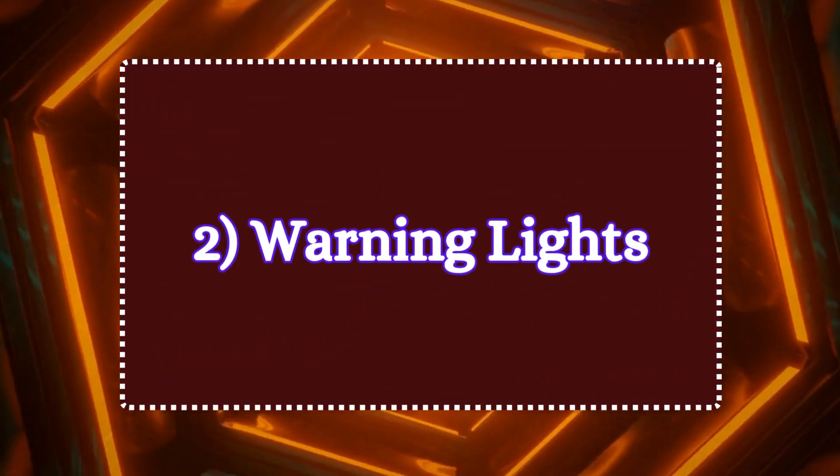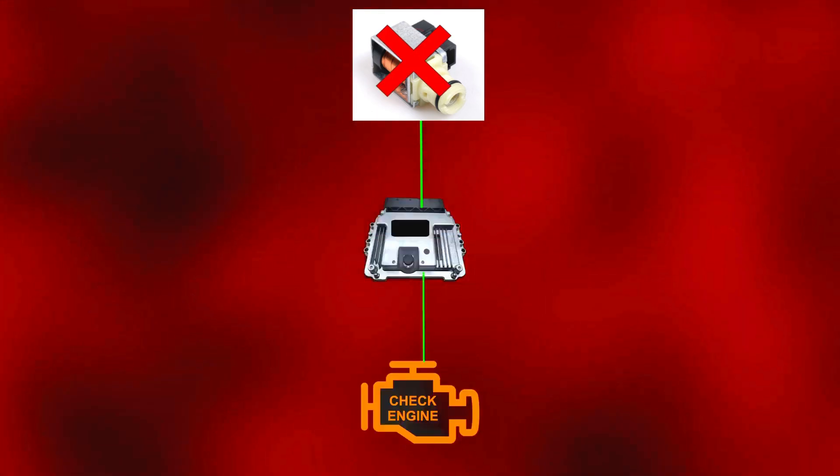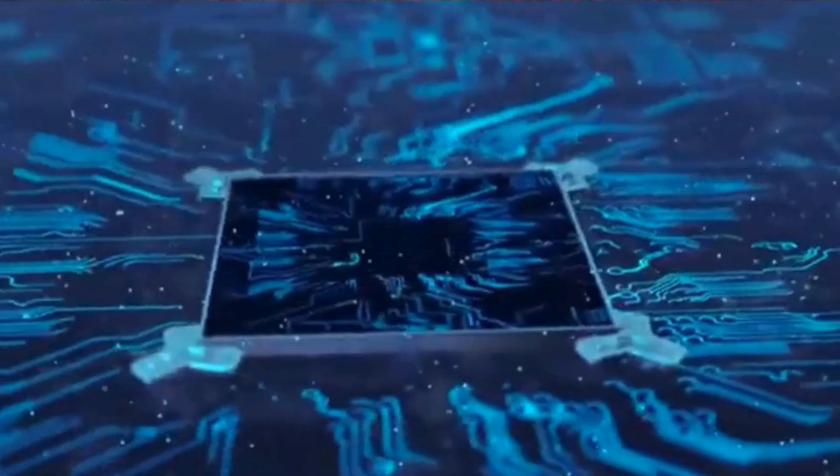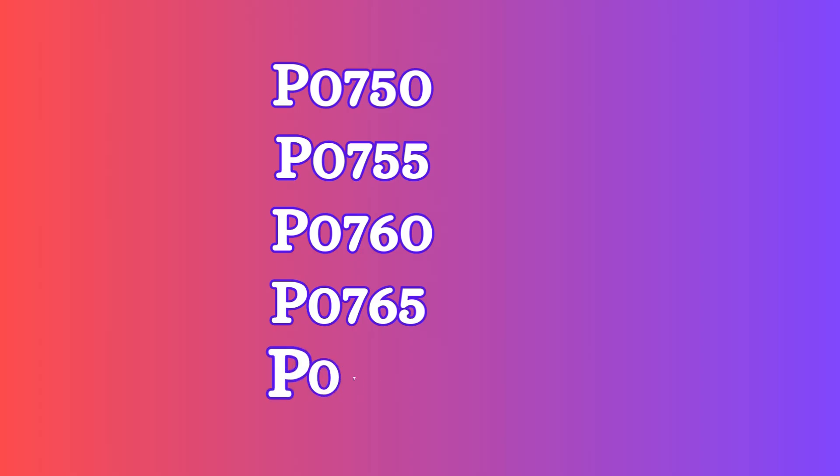Two, warning lights. When the transmission shift solenoid goes bad, the transmission control module triggers the check engine light to alert the driver. It may also trigger a trouble code such as P0750, P0755, P0760, P0765, or P0770.